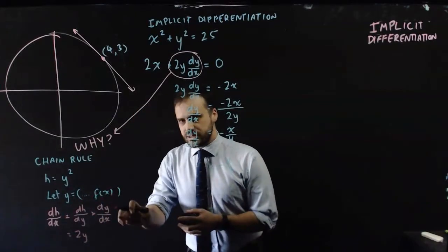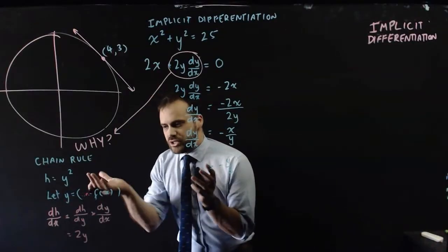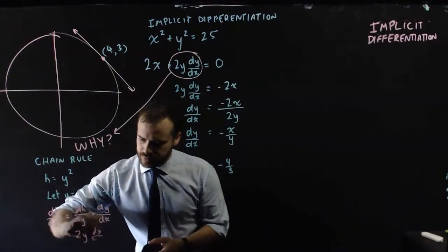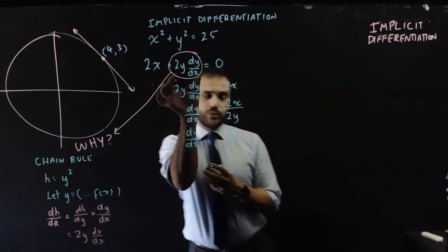dh/dy is just 2y. And this dy/dx, I don't know what dy/dx is. I didn't bother to rearrange it. I'm just keeping it as dy/dx.